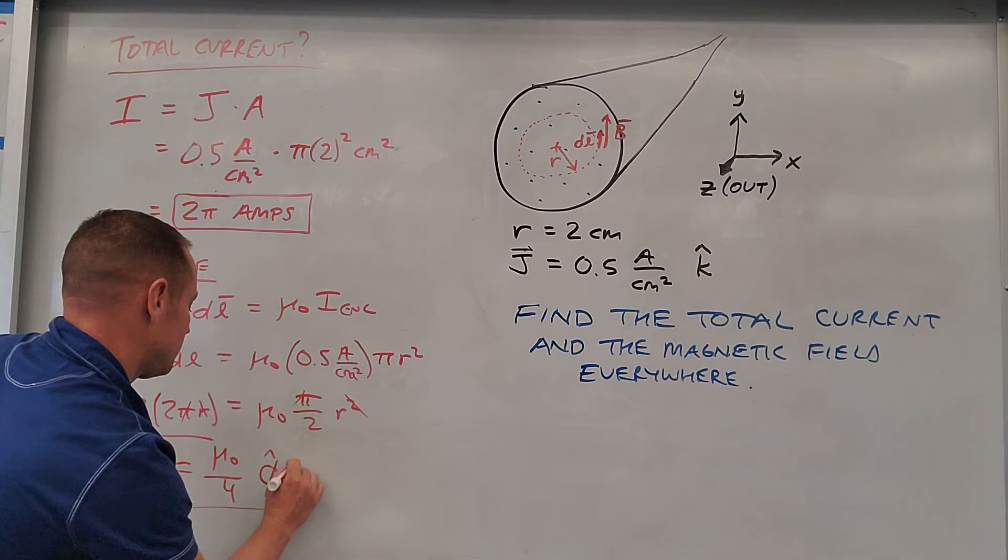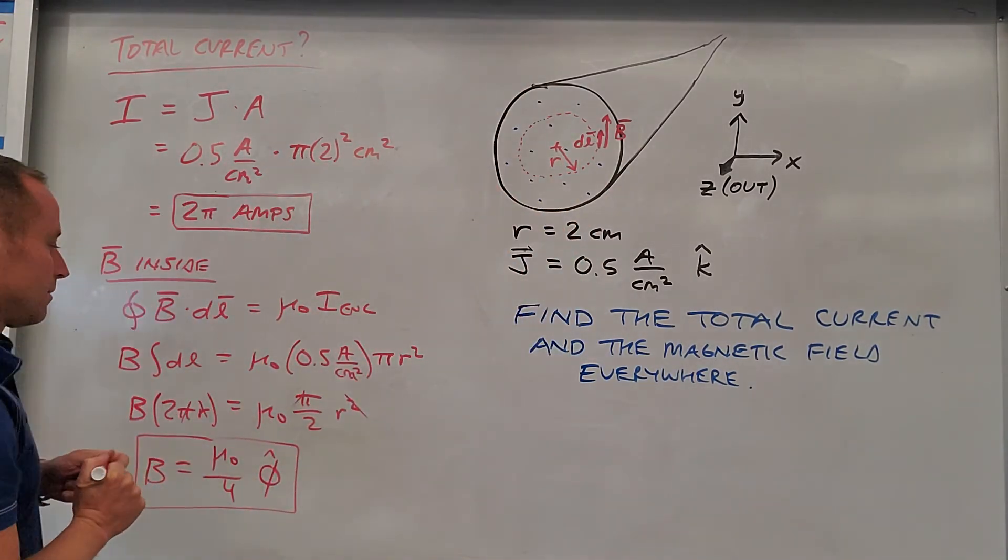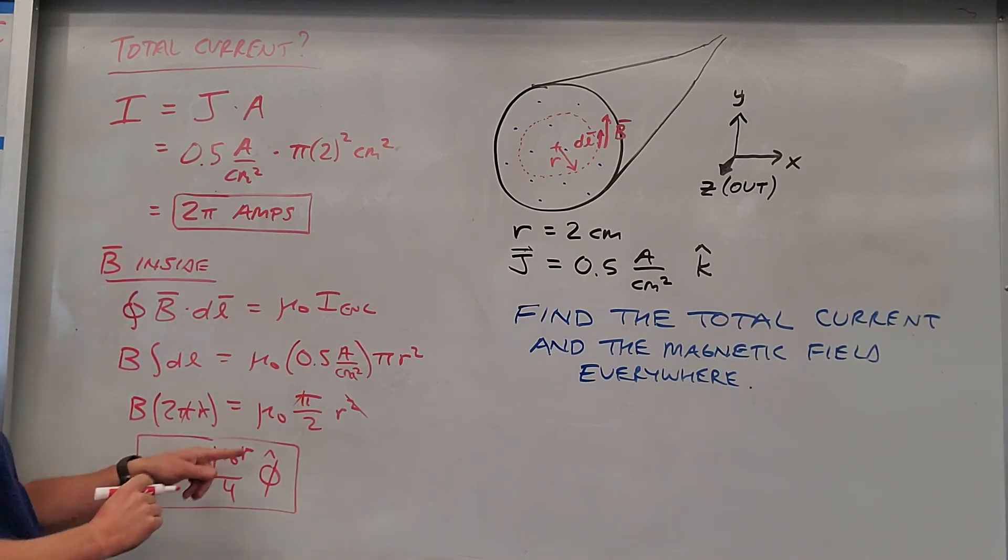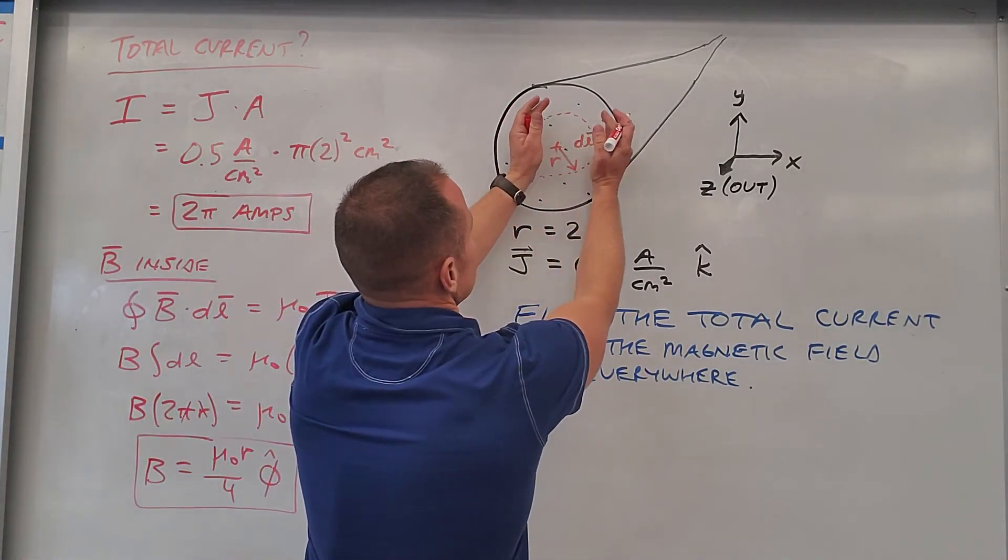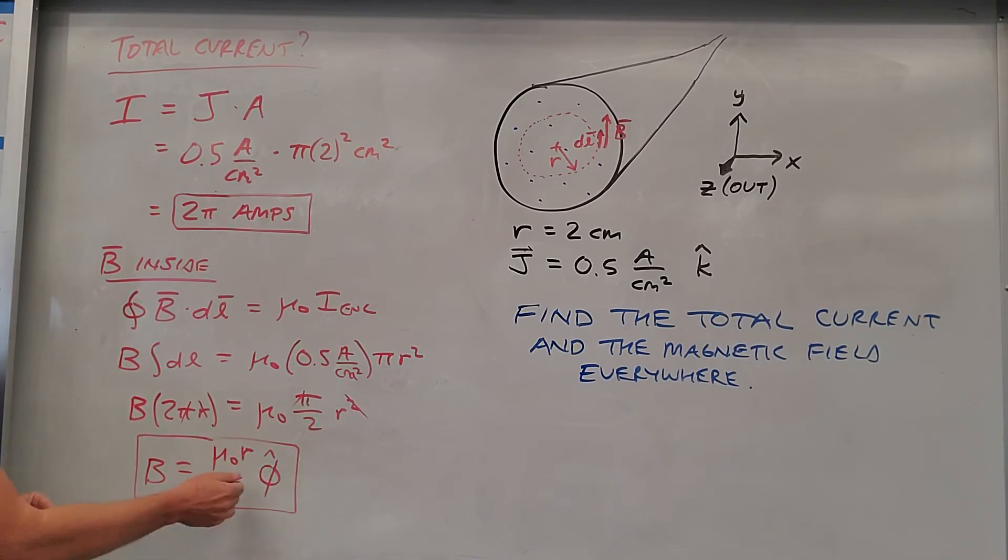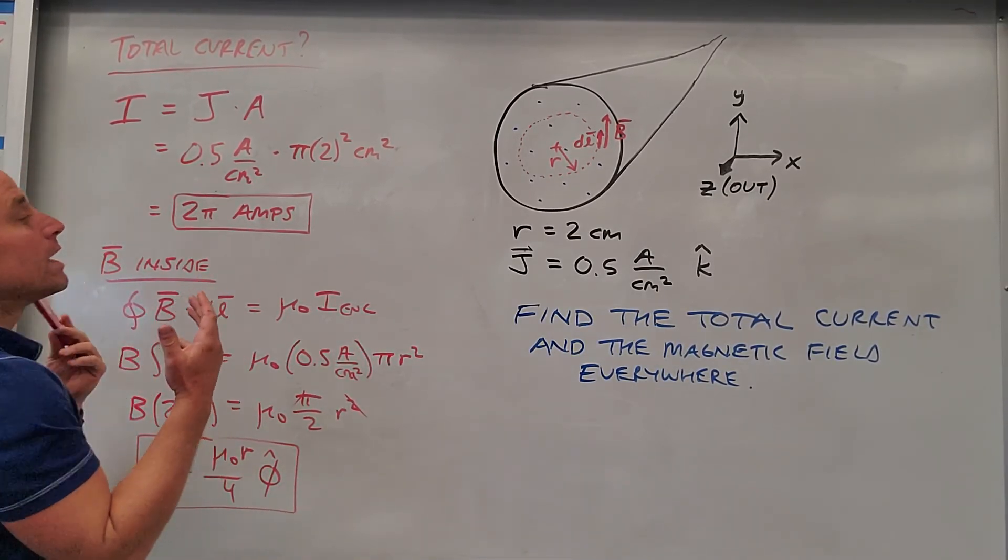And then since it circulates around in this way in a clockwise direction, what people will do is they'll say that it points in the φ̂ direction, so that swirls around this way. Oh, and I forgot a factor of r: μ₀r/4. So the field grows with radius until you get to the outside. So μ₀ times r over 4